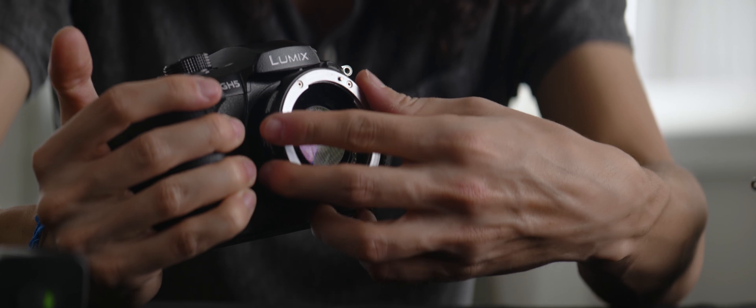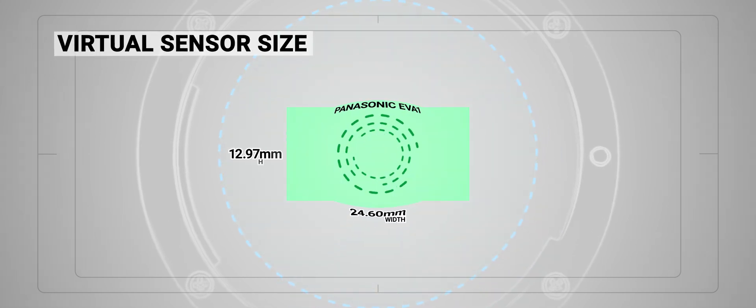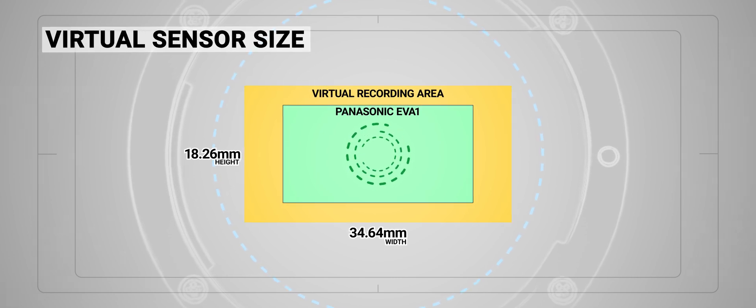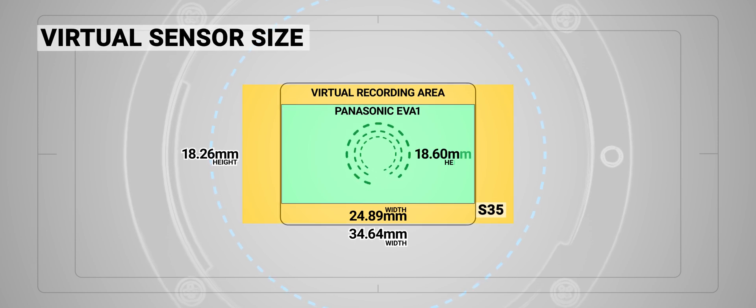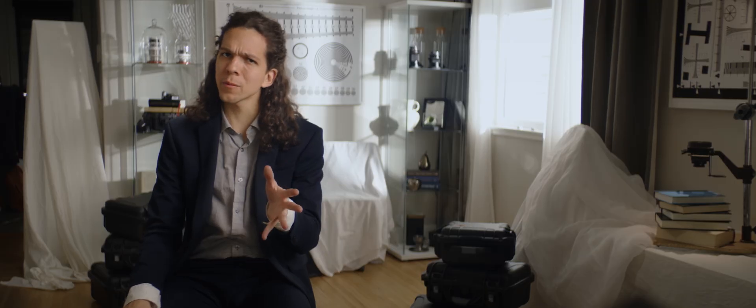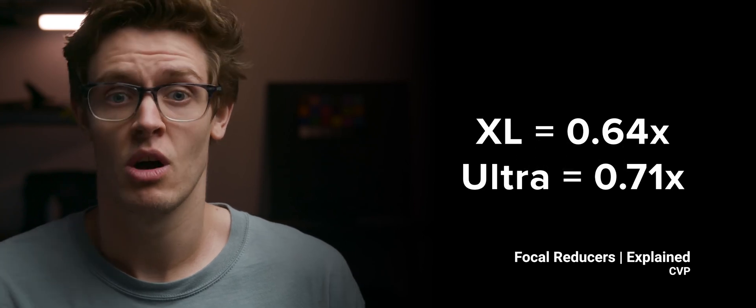Option two: we use a focal reducer to virtually boost our sensor size. Let's add a focal reducer to our ongoing Super 35 sensor example. Focal reducers can have different magnification powers, so we'll go with the most common one — 0.71x. We divide 24.6 and 12.97 by 0.71, resulting in a 34.64 x 18.26mm virtual recording area. This is 10mm wider than Super 35, but almost a perfect match to the 18.6mm height. I'd say this is better than using full-frame, and it gives you good reframing room on both sides. This boosted size is virtual — emulated by the focal reducer.